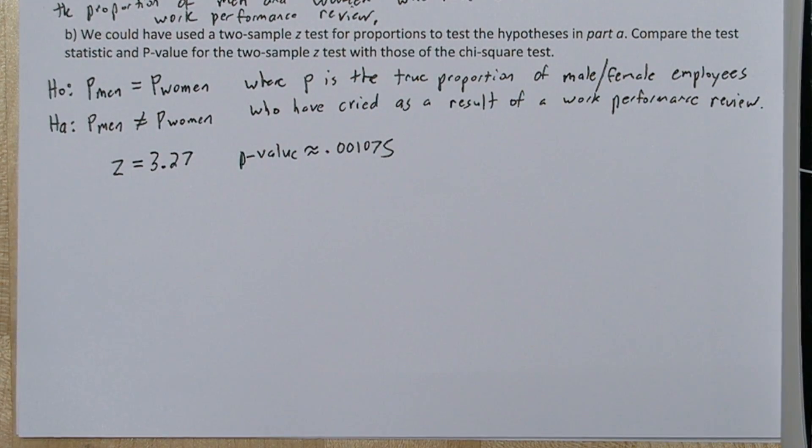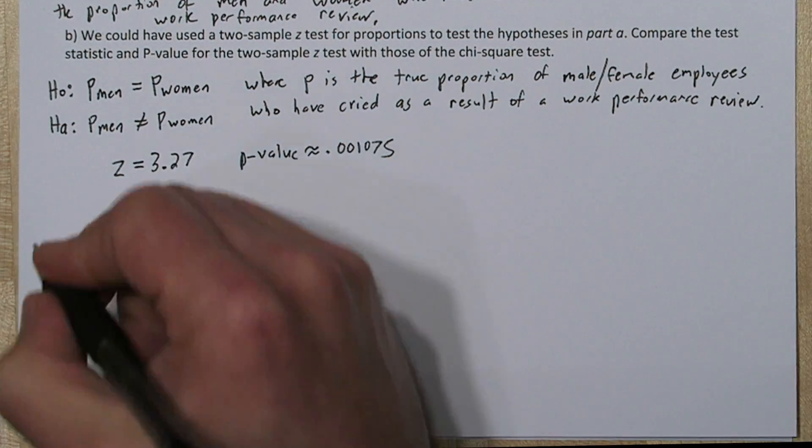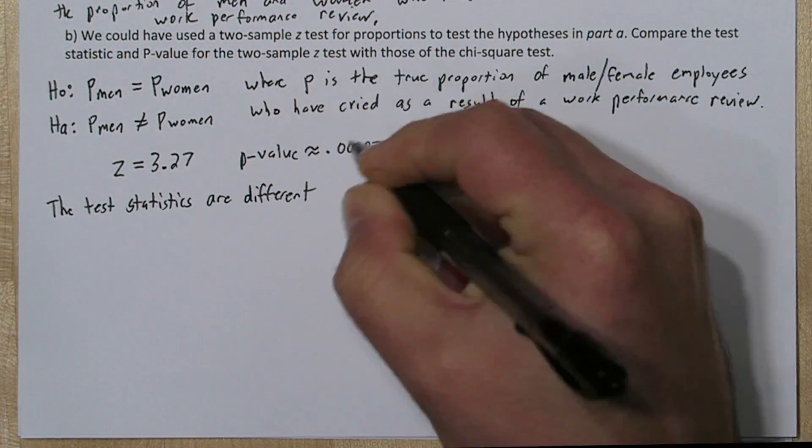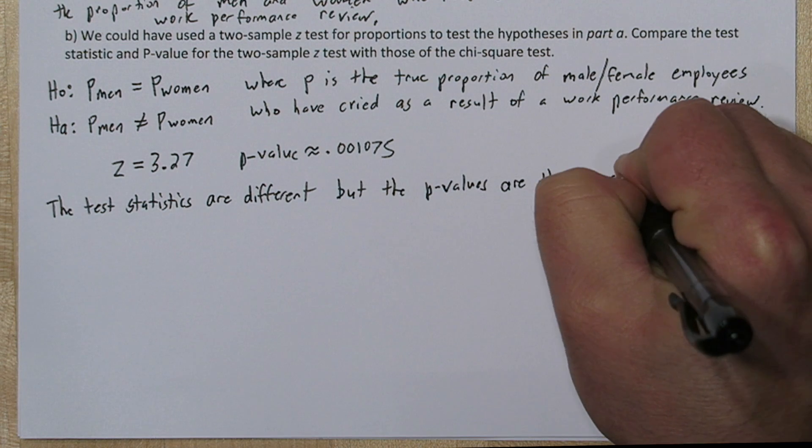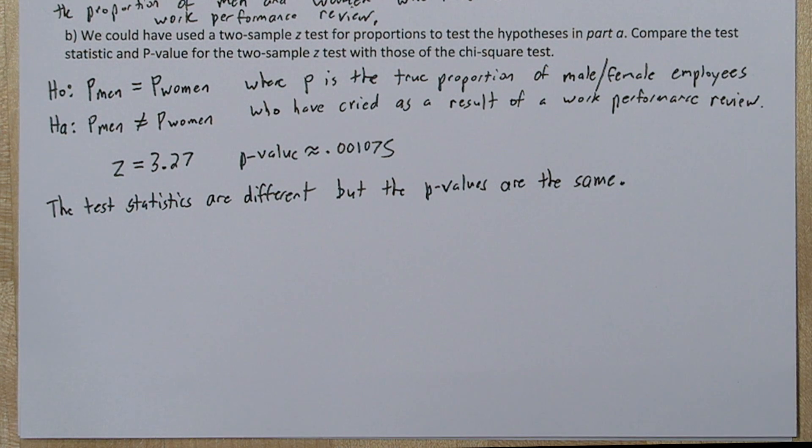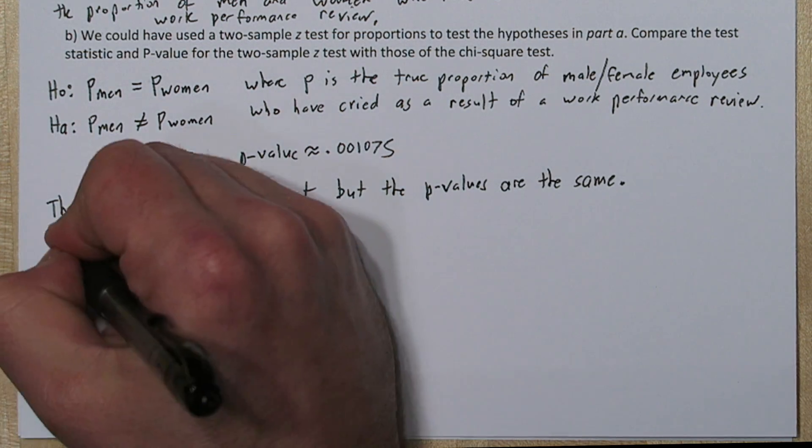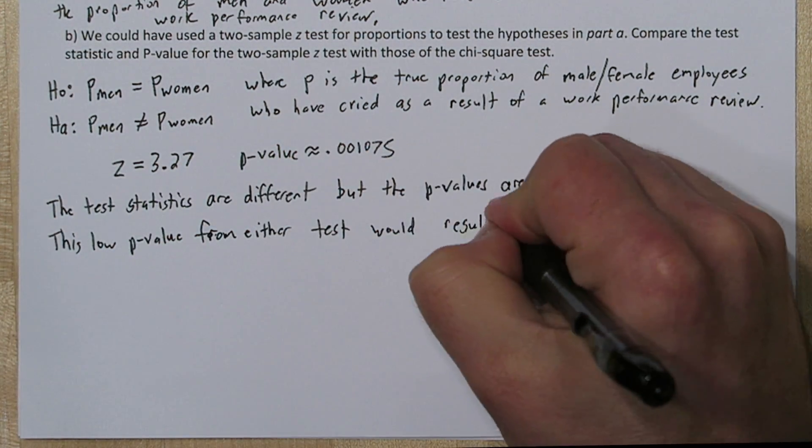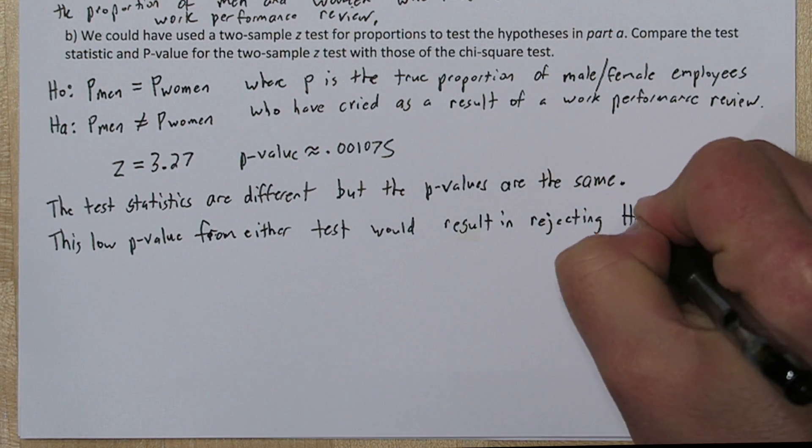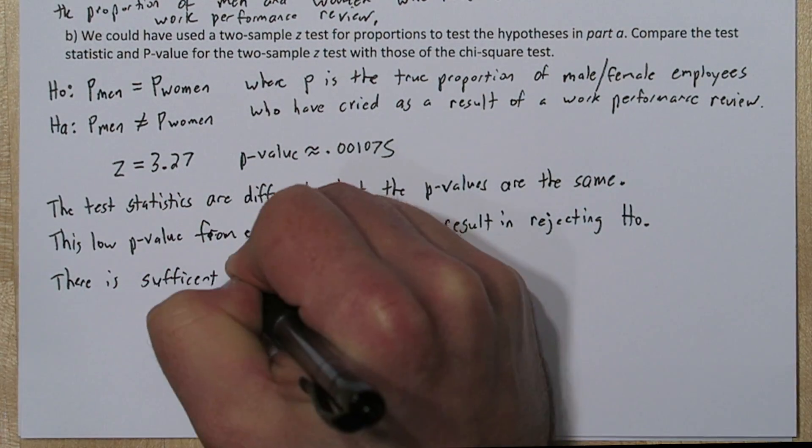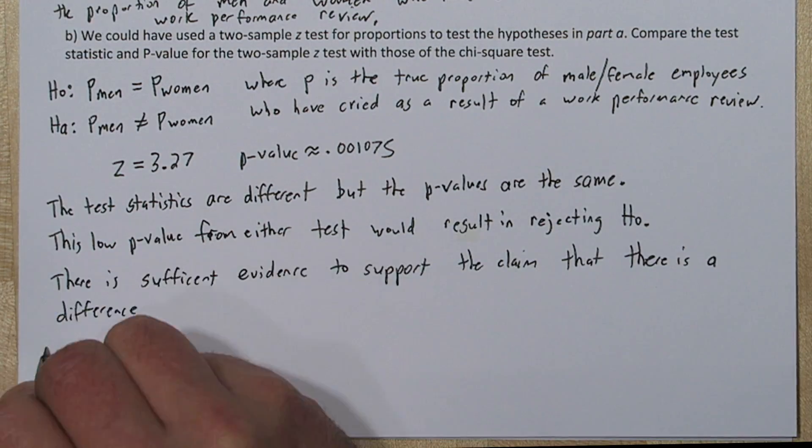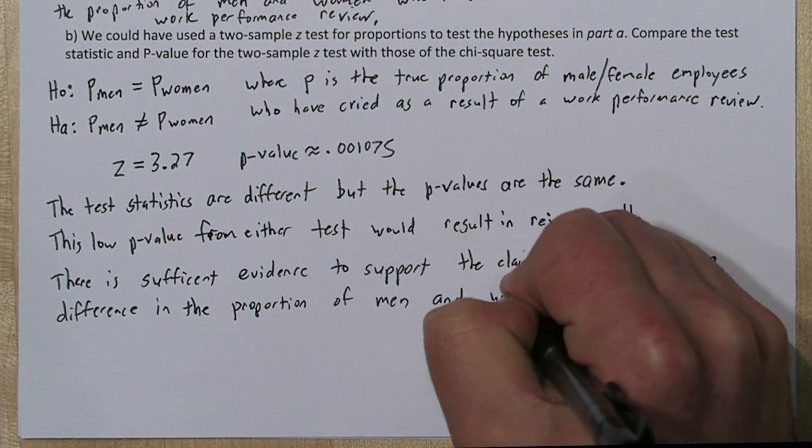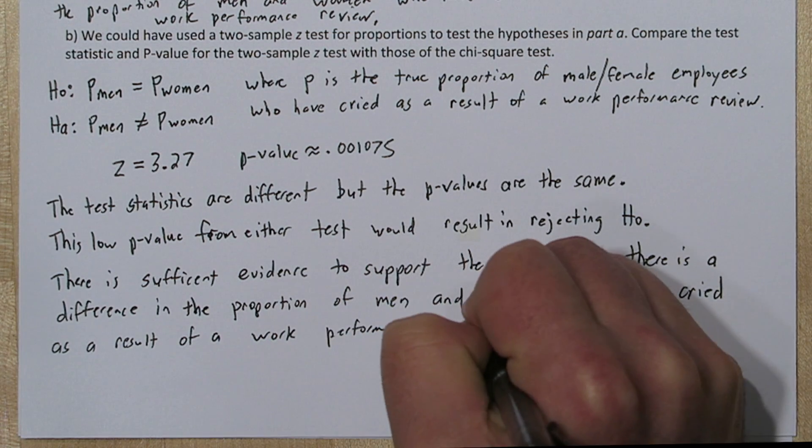So you may have noticed that our test statistics are different, but our p-values are the same. The reason the test statistics are different is one of them is based on a chi-square distribution with one degree freedom, and the other one is based on the normal distribution. Those are very different shapes, so to cut off the same p-value area, they have to be different values. So this low p-value from either test would always result in rejecting the null hypothesis. So our conclusion is the same as above. There is sufficient evidence to support the claim that there is a difference in the proportion of men and women who have cried as a result of a work performance review.